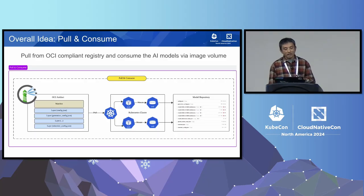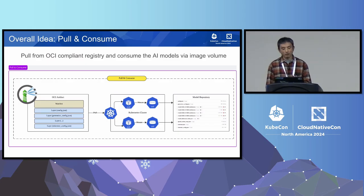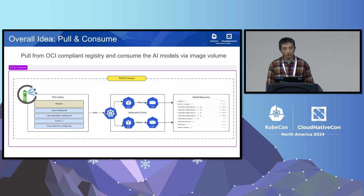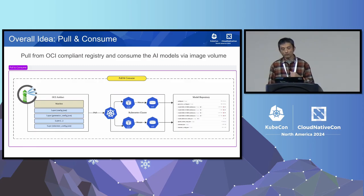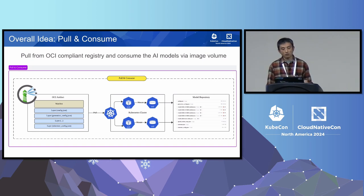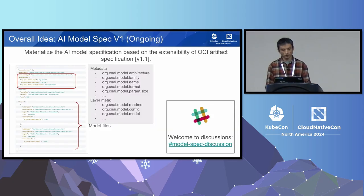The ultimate goal of effective model management is using it — the pull-and-consume scenario. In a Kubernetes 1.31 environment, we can leverage the image volume feature to directly mount the model artifact into a job or pod container. This allows the Kubernetes container runtime to pull model artifacts from the registry just like a container image, extracting the model layers into the container's mount path at runtime. The training or inference code can then easily access these models or dataset files. In non-Kubernetes environments, you can also use OCI clients to pull the model artifacts and extract the files to a specific location.